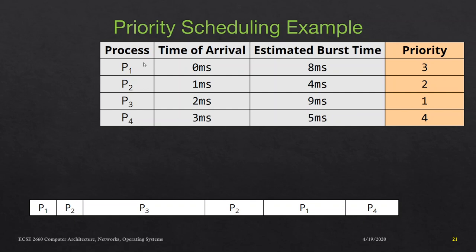We have four processes P1, P2, P3, P4. Their arrival times to the ready queue are 0, 1, 2, 3 milliseconds respectively. Their estimated burst times are 8, 4, 9, 5 milliseconds respectively, and we have an additional column for priority. Lower numbers indicate higher priority, so in this case P3 has the highest priority and P4 has the lowest priority.